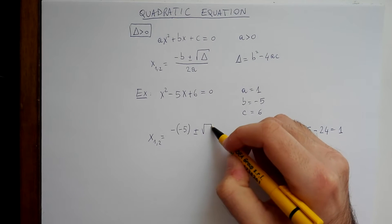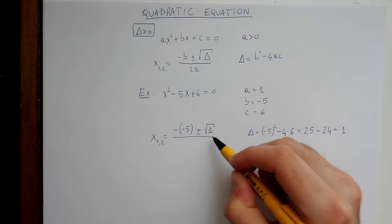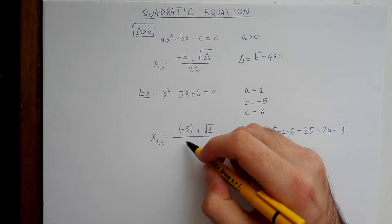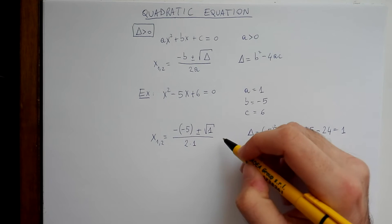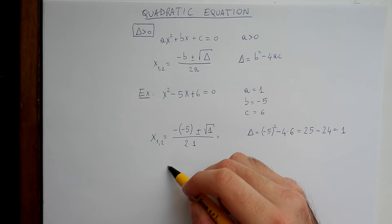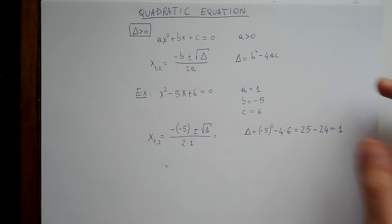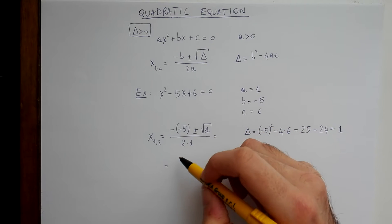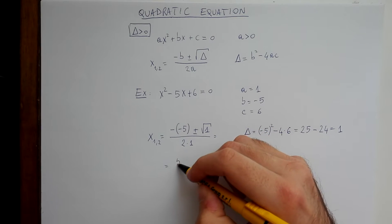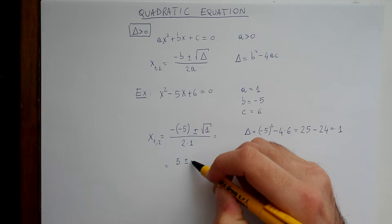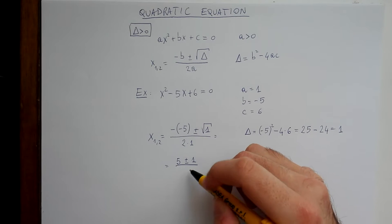We can write square root of 1 divided by 2a, so 2 times 1. So we get minus minus minus gives plus, so 5 plus or minus 1 divided by 2.